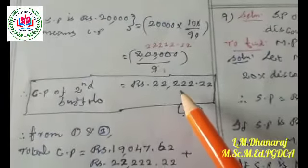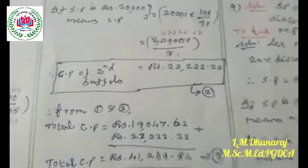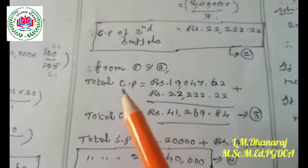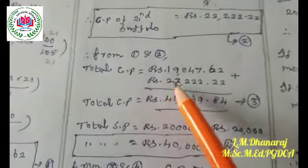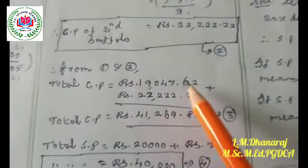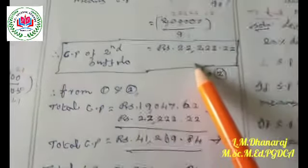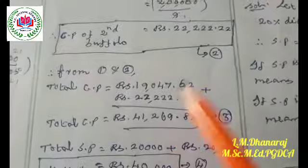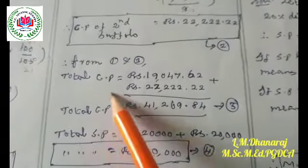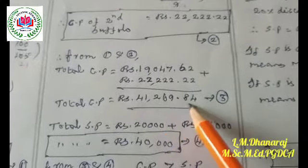The cost price of the second buffalo is rupees 22,222.22. Mark this as equation number two. From equations one and two: cost price of buffalo one is rupees 19,047.62 and cost price of buffalo two is rupees 22,222.22. Adding these together, the total cost price is rupees 41,269.84.